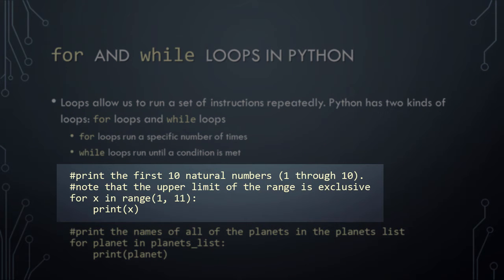In this first example, we're using a for loop to print the first ten natural numbers, that is, integers ranging from 1 to 10. To create the for loop, we begin with the keyword 'for', followed by a variable name — in this case, the variable is named x. As the for loop runs, a different value will be assigned to x for each iteration. We then specify the set of items to iterate over, followed by a colon. The range function returns a range of numbers between the lower bound and the upper bound. Note that the lower bound is inclusive, while the upper bound is exclusive.